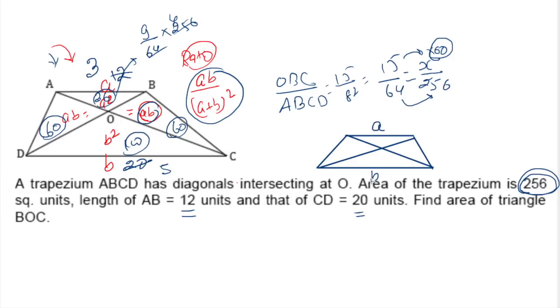If this is a and b as the side ratio, we can say this is ab, this is ab—that is the product of these two. This is a squared, this is b squared by the similarity or the Thales theorem. This is the classical ratio within the trapezium.